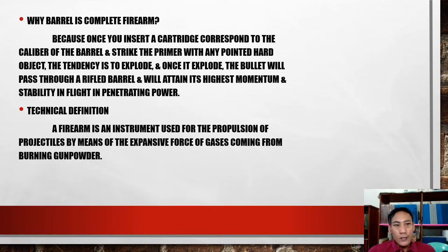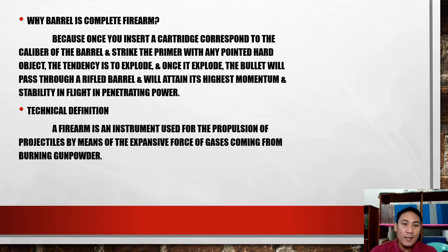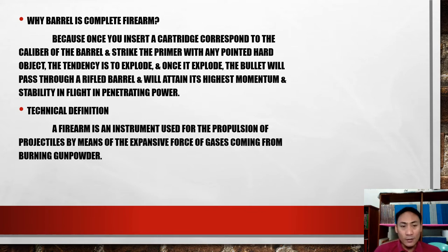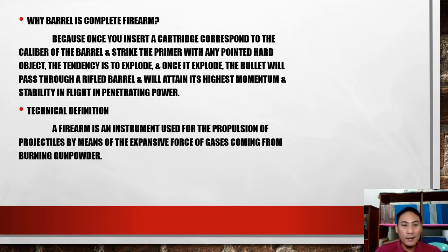Why is a barrel considered a complete firearm? Because once you insert a cartridge corresponding to the caliber of the barrel and strike the primer with any pointed hard object, the tendency is for it to explode. Once it explodes, the bullet will pass through the rifle barrel and attain its highest momentum, stability in flight, and penetrating power. So the barrel, once loaded with ammunition, can have the primer struck and the bullet or projectile discharged — that is why it is considered a complete firearm.